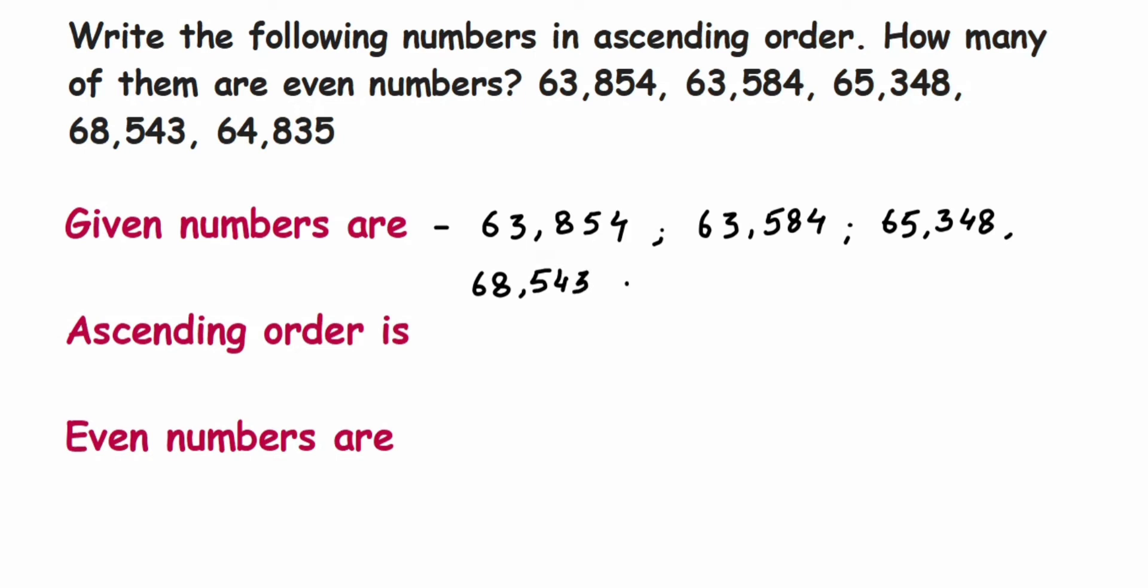Then the next number is 64,835. Now among these numbers, you're asking us to write them in ascending order. Ascending order means you have to start with the smallest number and proceed to the largest or greatest number.